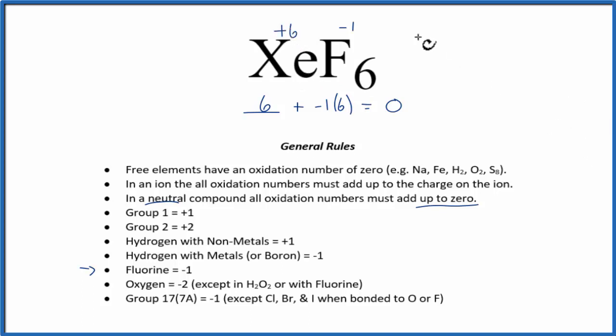So to recap, we found the oxidation numbers for the elements we knew, in this case the fluorine, and we use that to find the oxidation number of the one we didn't. This is Dr. B with the oxidation numbers for XeF6 xenon hexafluoride. Thanks for watching.